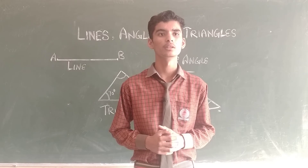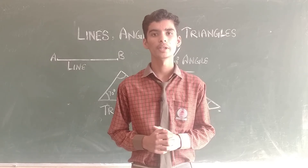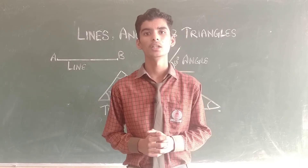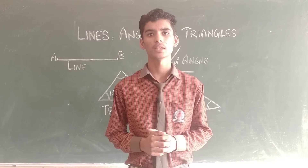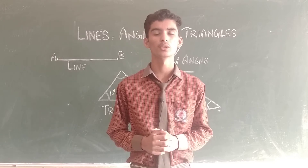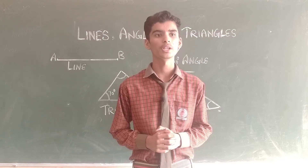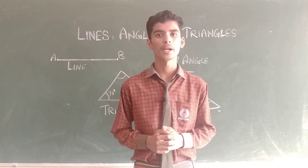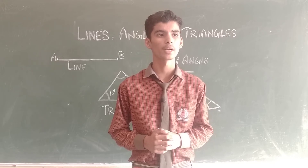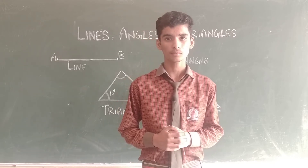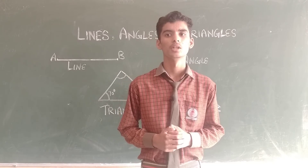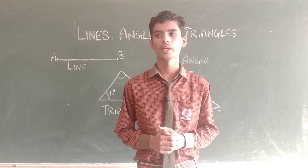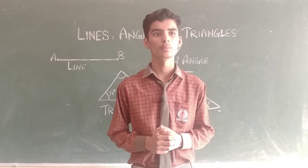Now about the three types of triangle on the basis of angles. The first one is acute angle triangle — a triangle in which all three angles are less than 90 degrees is called an acute angle triangle. The second one is right angle triangle — a triangle in which one angle measures 90 degrees and the other two are less than 90 degrees is called a right angle triangle. The third one is obtuse angle triangle — a triangle in which one angle is more than 90 degrees but less than 180 degrees is called an obtuse angle triangle.